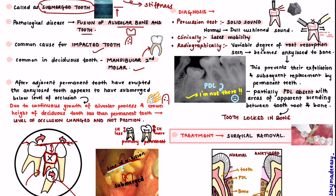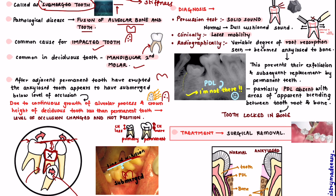For diagnosis, clinically you will see that the tooth is fused with the bone, so there is no mobility — it becomes stiffer. On percussion, when you hit the tooth with an instrument, you will hear a solid sound because it is fused with the bone. In contrast, a normal, non-ankylosed tooth gives a dull, cushioned sound, whereas the ankylosed tooth gives a solid sound.